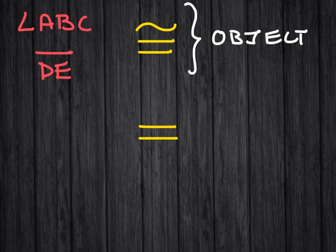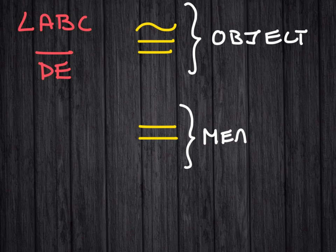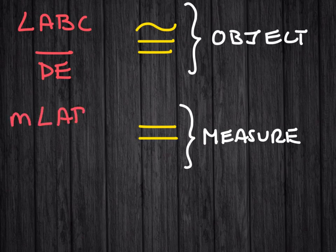They are referring to the physicality of the angle or of the segment. The equals sign is referring to the measurement of things, the size of things, and is denoted a little bit differently. It's denoted by the measure of angle ABC or the measure of DE.